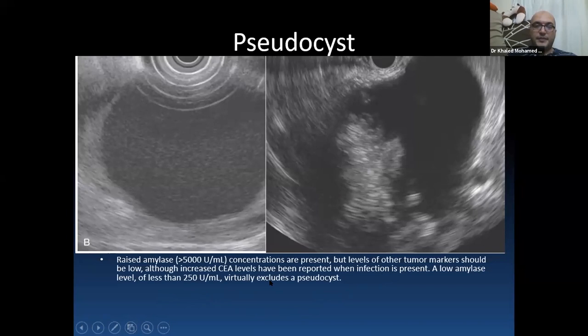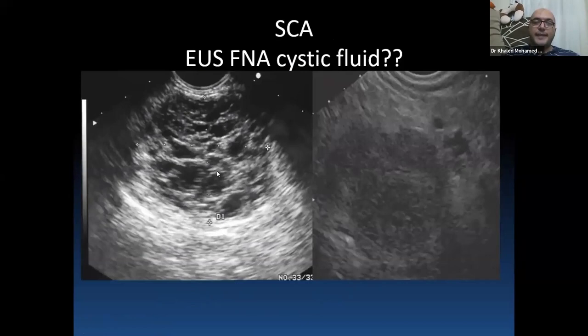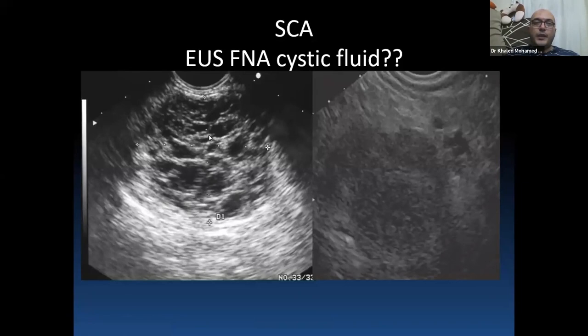In serous cystadenoma, the typical EOS image for microcystic serous cystadenoma gives the famous honeycomb appearance. There are two to three types: microcystic and, to a lesser extent, solid types in less than 18%. It is extremely difficult to diagnose the solid type of serous cystadenoma by EOS or EOS FNA, and most solid-type serous cystadenomas are diagnosed after surgical resection.